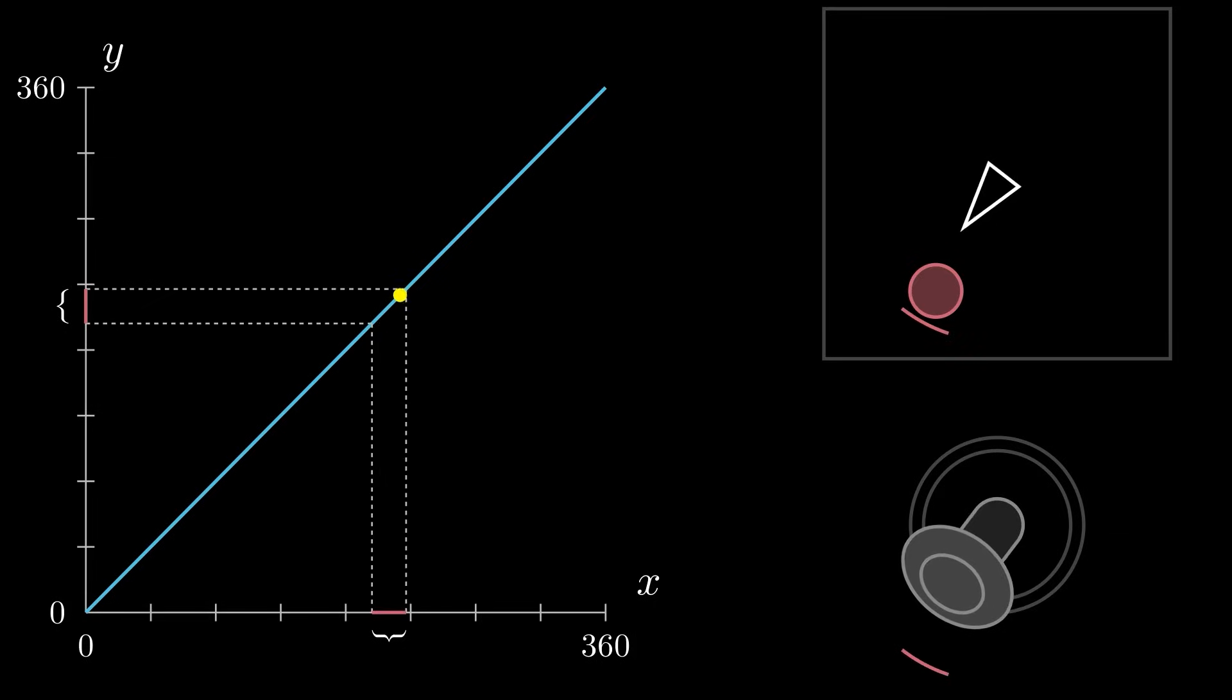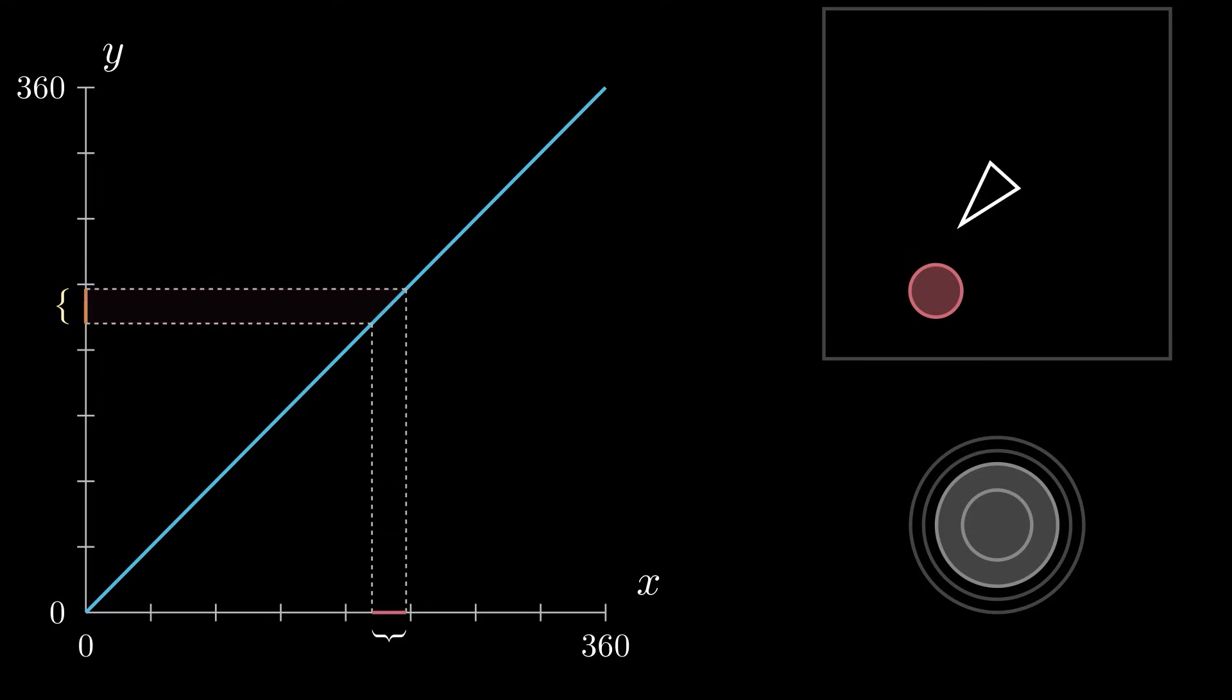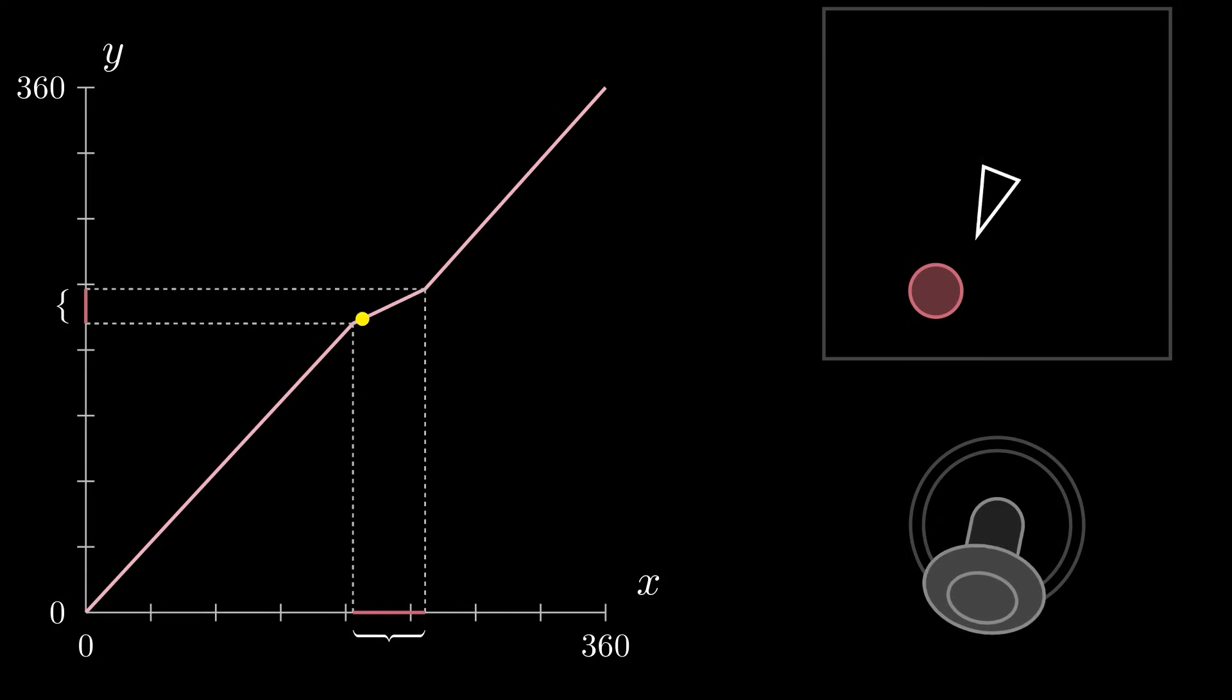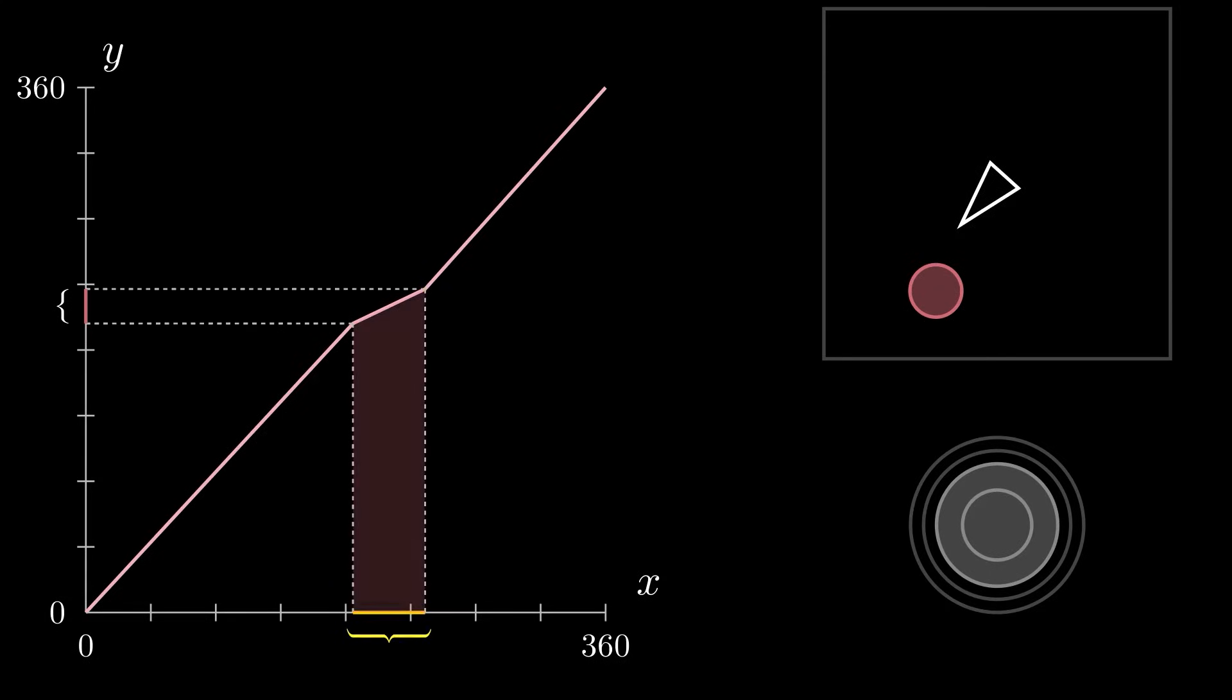When f equals x, the range of avatar orientations that are on target is equal to the range of controller inputs that are on target. However, if we select f to widen the target region, a greater range of controller inputs get mapped to on target avatar orientations.